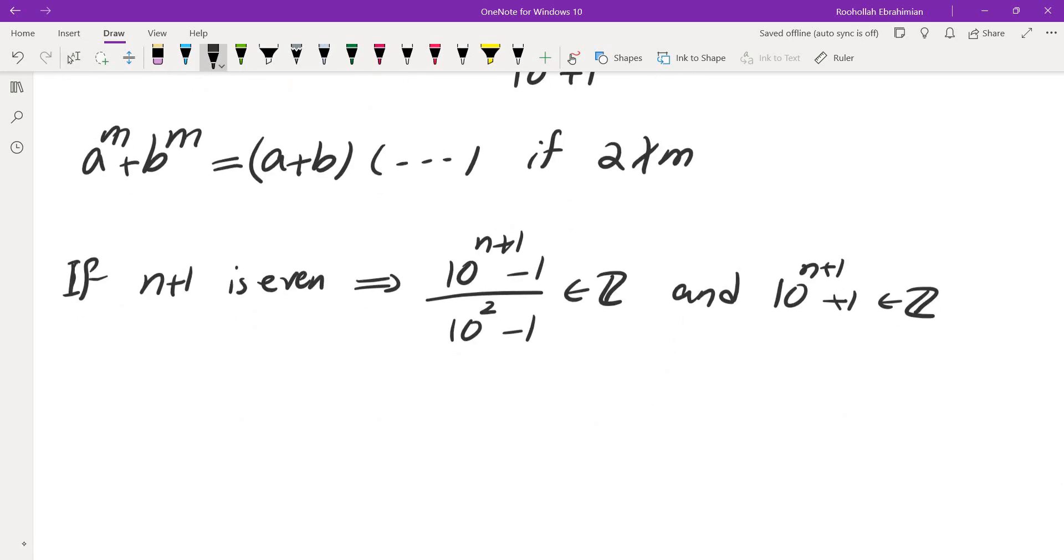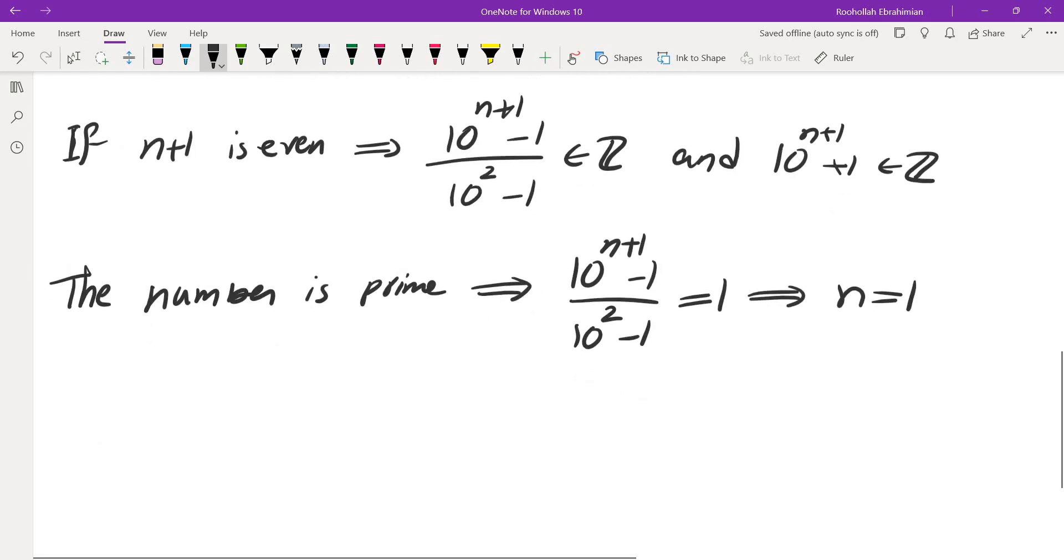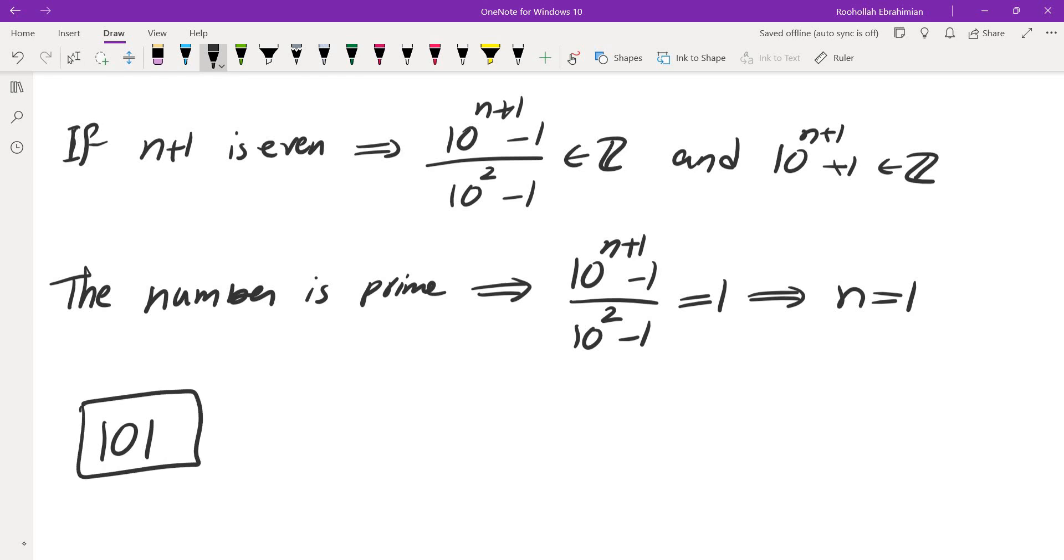So, in order for this to be prime, the number is prime, that implies 10 to the power of n plus 1 minus 1 over 10 squared minus 1 is 1, and that would give us n is equal to 1, which would mean the only possibility is 101, and everything else is not a prime.